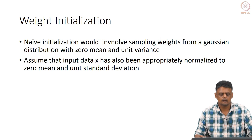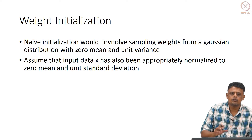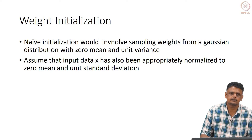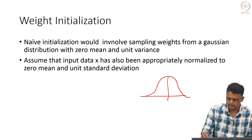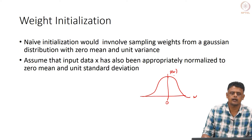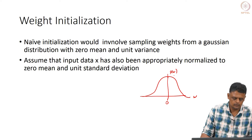A naive initialization involves sampling weights from a Gaussian or uniform random distribution with zero mean and unit variance. The distribution of weights for a given neuron would look like a standard normal centered at W = 0. However, there are problems associated with this approach.